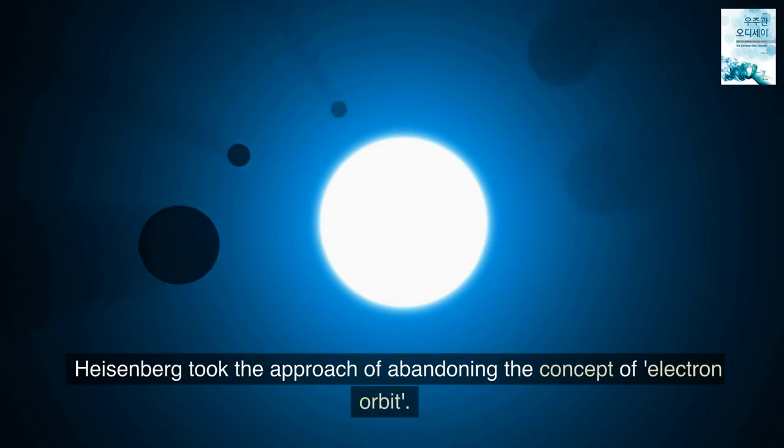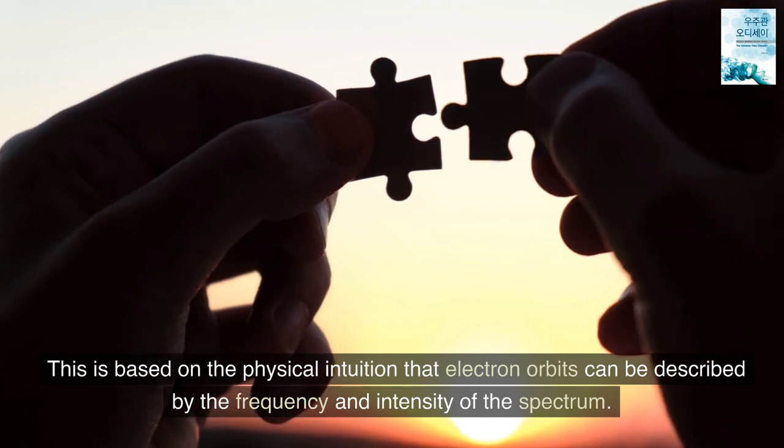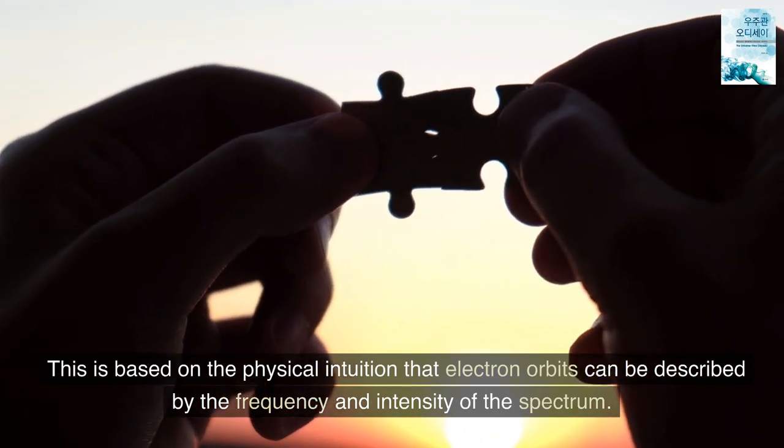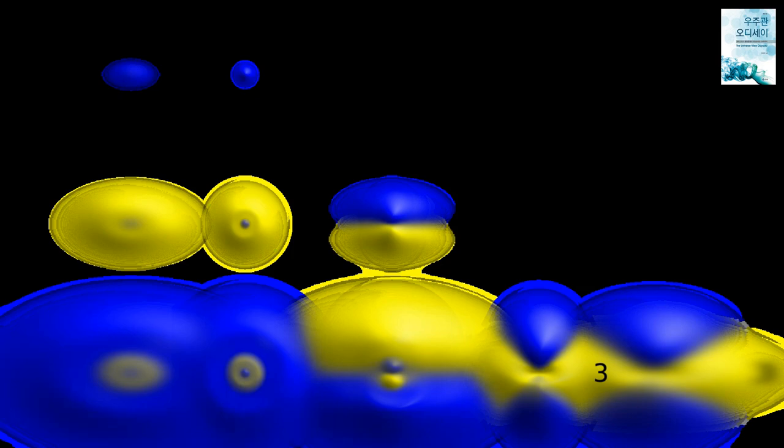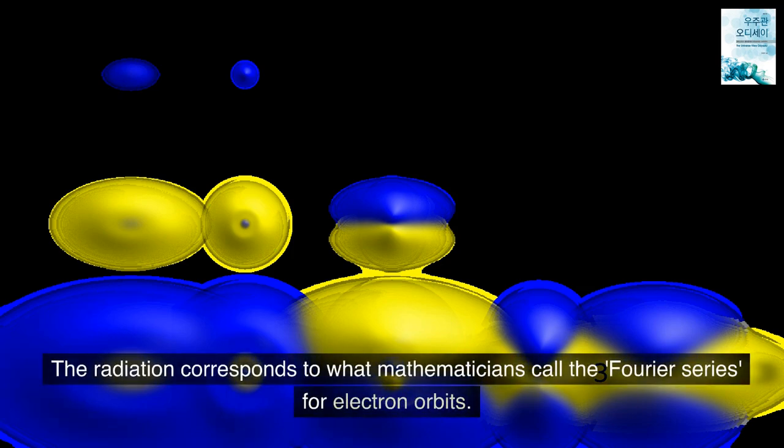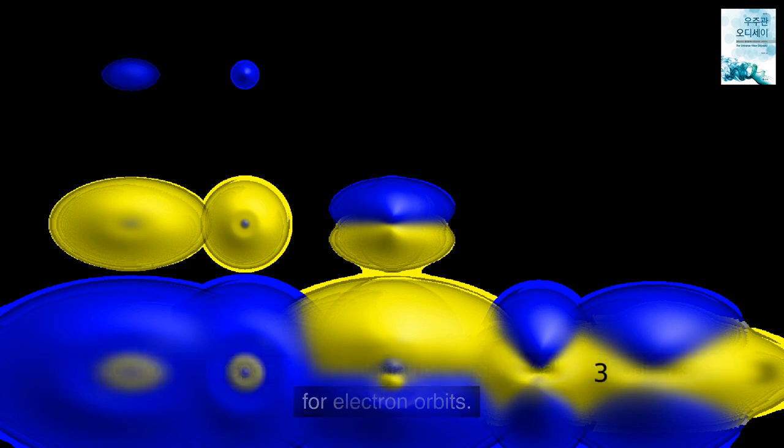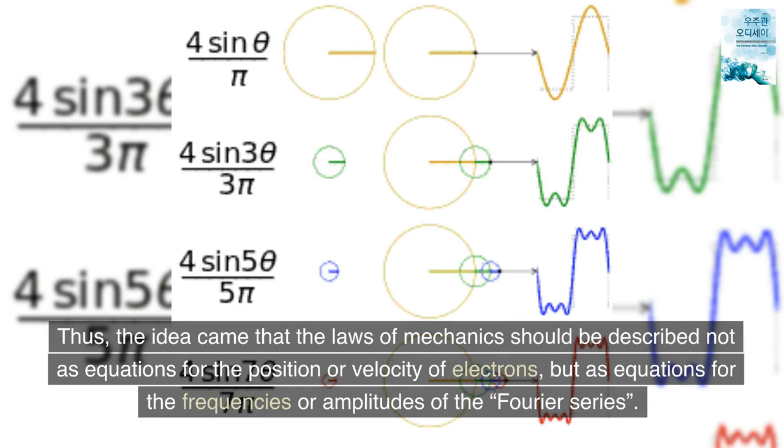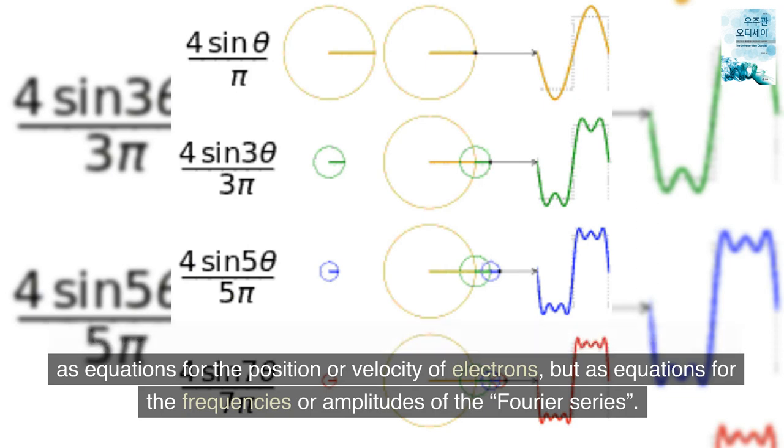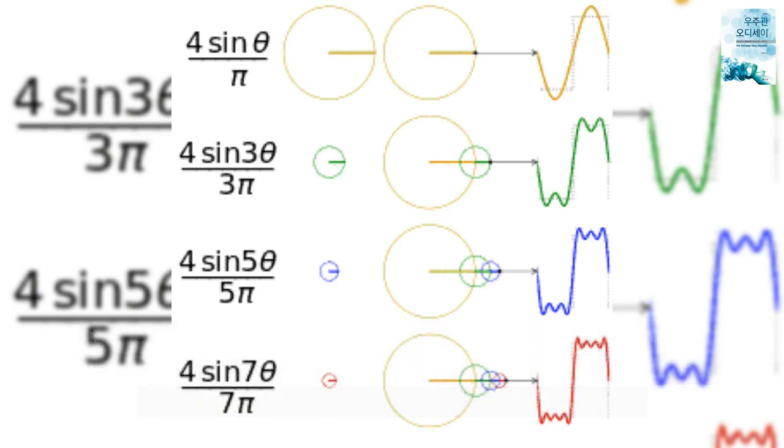Heisenberg took the approach of abandoning the concept of electron orbit. This is based on the physical intuition that electron orbits can be described by the frequency and intensity of the spectrum. The radiation corresponds to what mathematicians call the Fourier series for electron orbits. Thus, the idea came that the laws of mechanics should be described not as equations for the position or velocity of electrons, but as equations for the frequencies or amplitudes of the Fourier series.